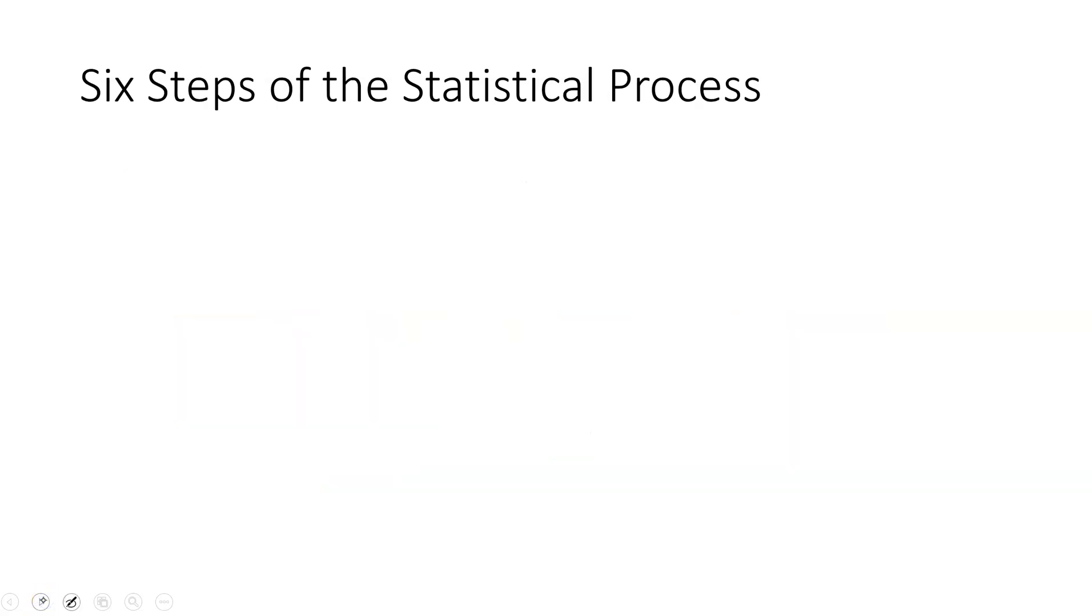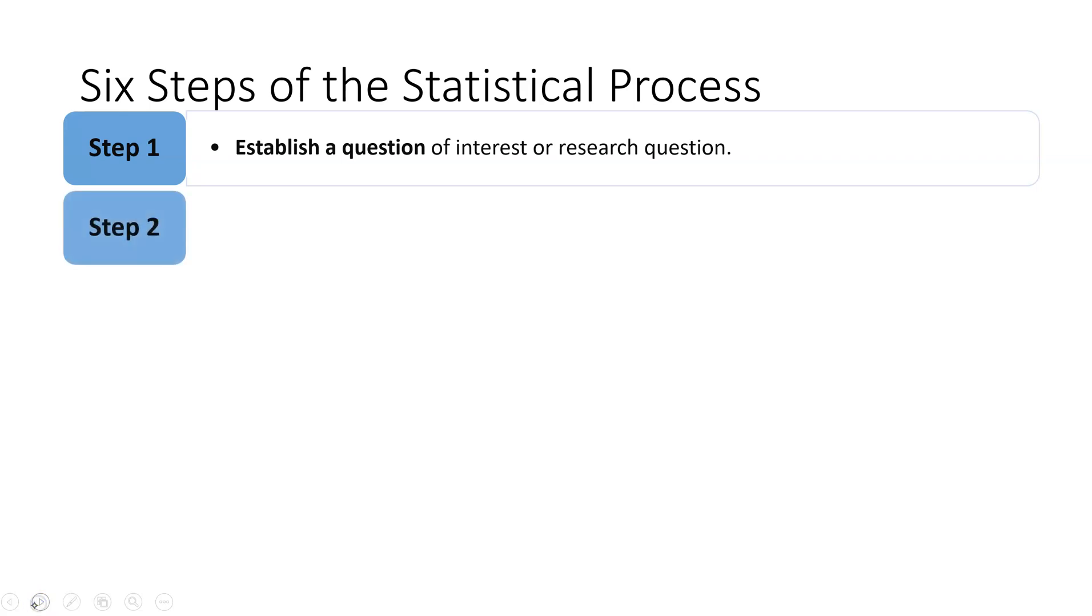All right, so the steps in the statistical process really start with forming the research question. That's one of the most important things that we've got to do: establish a question of interest. You're sitting down, you're curious about something, we really need to think about how are we going to form that question in such a way that we can collect data in order to answer that question, because really that's going to be the ultimate goal. In step two we need to design a proper study to answer that question of interest.